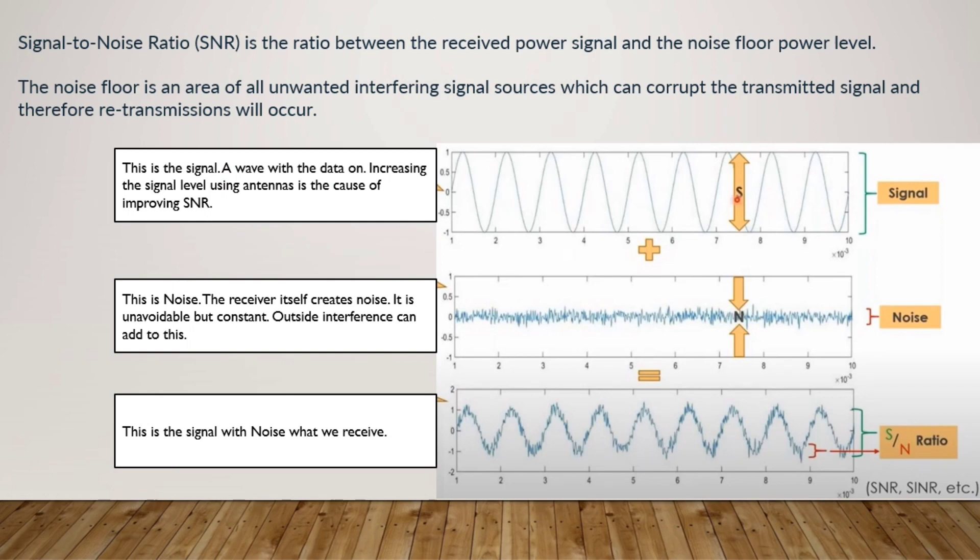Now what is signal to noise ratio? SNR or signal to noise ratio is the ratio between the received power signal and the noise floor power level. The noise floor is an area of all unwanted interfering signal sources which can corrupt the transmitted signal.